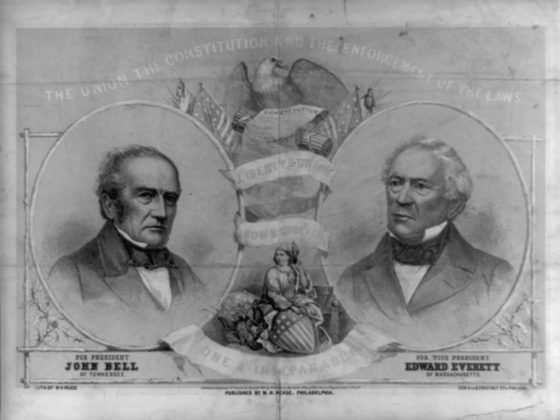The Constitutional Union Party was a political party in the United States created in 1860, which ran against the Republicans and Democrats as a fourth party in 1860. It was made up of conservative former Whigs who wanted to avoid secession over the slavery issue. These former Whigs, some of whom had been under the banner of the Opposition Party in 1854–1858, teamed up with former Know Nothings and a few Southern Democrats who were against secession to form the Constitutional Union Party.